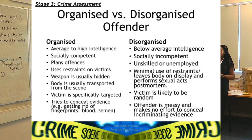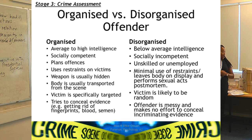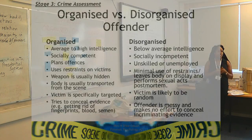The organized person: definitely average to high intelligence, socially competent, plans offenses, uses restraints on victims, weapon is usually hidden, body is transported from the scene, victim is specifically targeted, and they try to conceal the evidence. The disorganized offender: below average intelligence, socially incompetent, unskilled or unemployed, minimal use of restraints and leaves body on display, victim is likely to be random, and the offender is messy and makes no effort to conceal incriminating evidence.